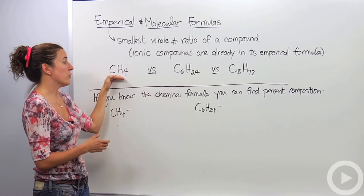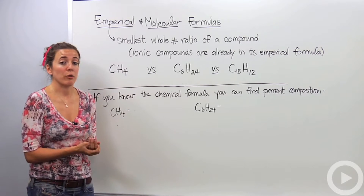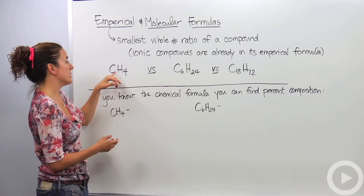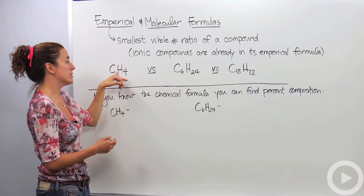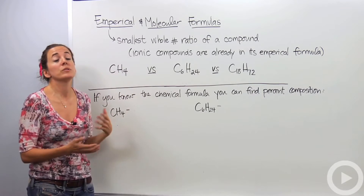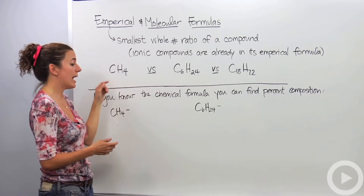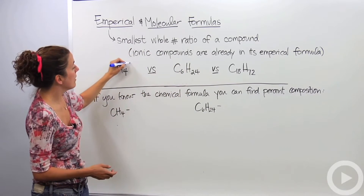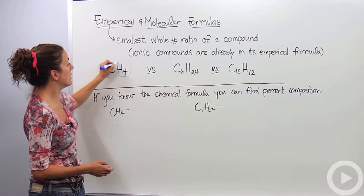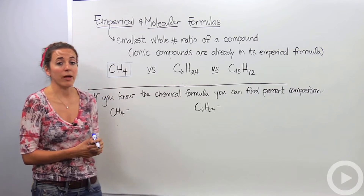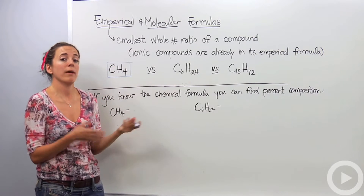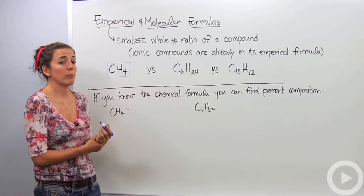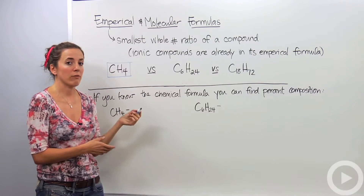We have CH4, and CH4 is actually an empirical formula — it's already in its lowest ratio. It has subscripts of 1 and 4, and we can't reduce those anymore. So this is an empirical formula. However, it also is a molecular formula. There is a compound out there that has the formula CH4 — methane, a very common compound. So this is both an empirical formula and a molecular formula.